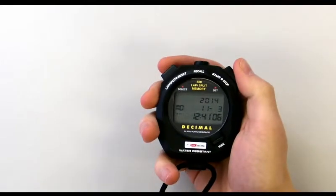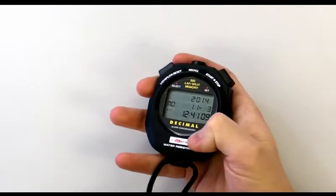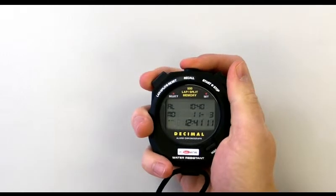The FastTime 500D also shows the time and date as well as having an alarm feature which is set by holding the recall button.